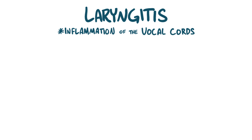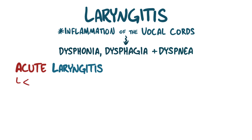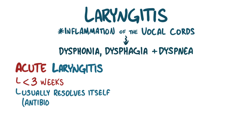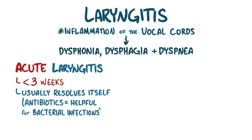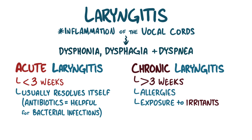As a quick recap: laryngitis is inflammation of the vocal cords and it causes dysphonia, dysphagia, and dyspnea. Acute laryngitis usually lasts for less than three weeks and usually resolves on its own, although antibiotics are helpful for bacterial laryngitis. Chronic laryngitis lasts for more than three weeks and is usually caused by allergies, exposure to irritating agents, or gastroesophageal reflux.